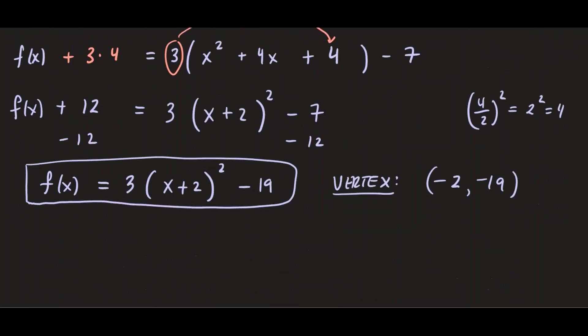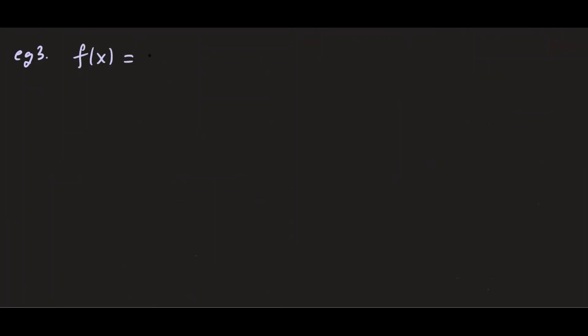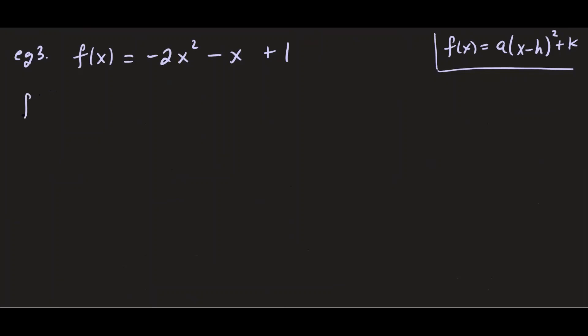Let's do one last example. Say f(x) = -2x² - x + 1. Again we want to complete the square to write f(x) = a(x - h)² + k. We rewrite by grouping the quadratic and linear terms: (-2x² - x) and leaving the constant outside. We want the coefficient of x² to be 1, so we factor out -2 from the first and second terms.